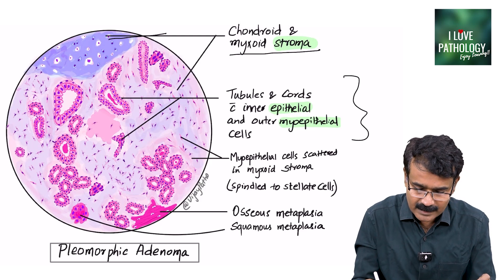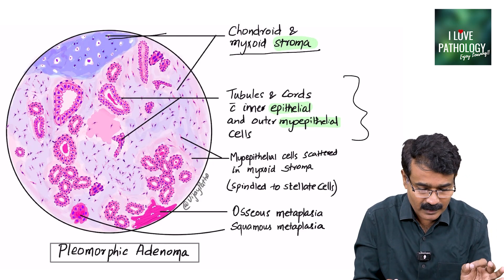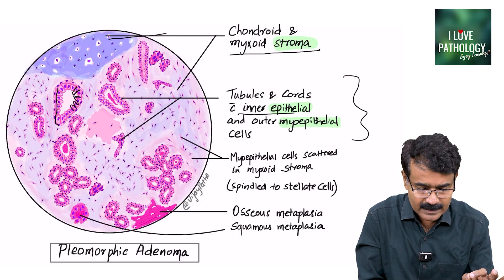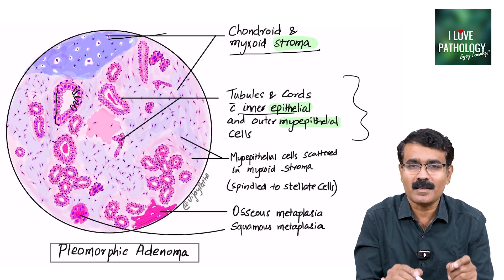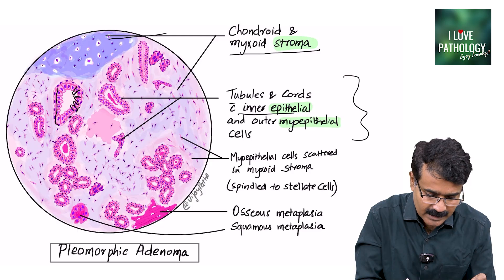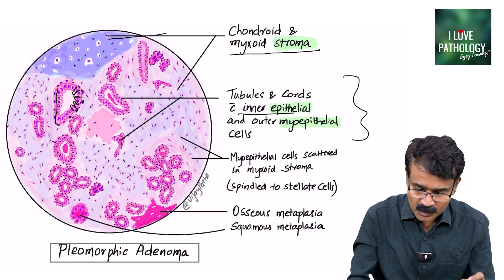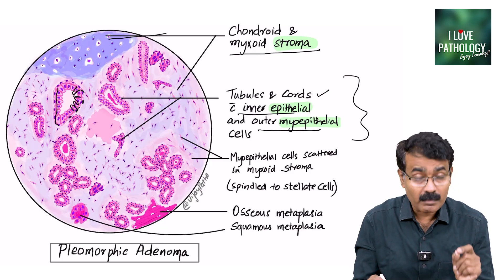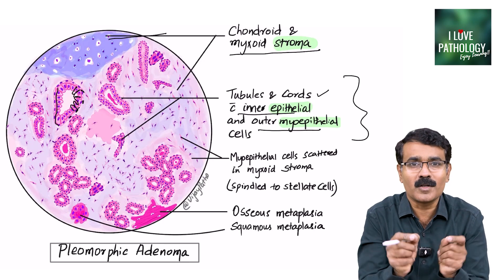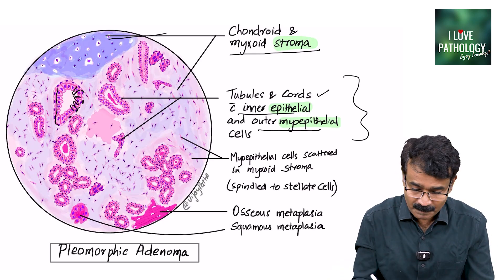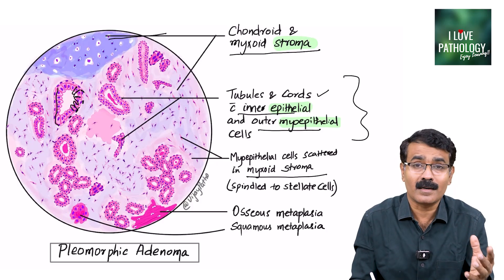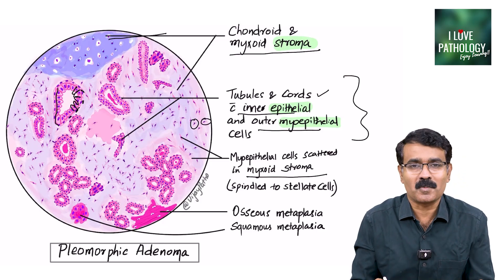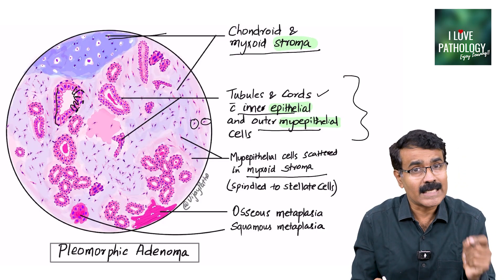The epithelial component is composed of tubules and cords of cells, which are lined by inner epithelial cells. Surrounding these epithelial cells are the myoepithelial cells — the flattened ones are the myoepithelial cells. Tubules and cords with inner epithelial cells and the outer myoepithelial cells. Remember, myoepithelial cells need not always be around the tubules — they can also be seen scattered in the myxoid stroma as spindle or stellate shaped cells.